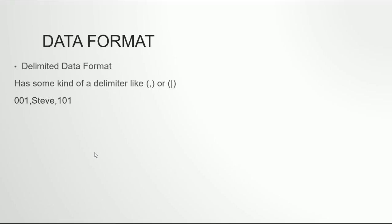In the delimited format, the data looks something like this: you have the first column — say '001' as an ID — then a comma delimiter states the first column ends here. The second column might be an employee name like 'Steve', followed by another comma, and then the third column like department ID '101'. You can have multiple rows like this in the data file, saved in .txt, .csv, or .dat format. A CSV file is actually just a plain text file with data in a particular format — no different from a .txt file.